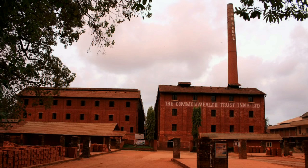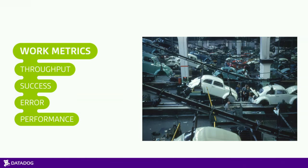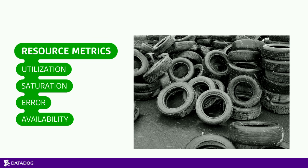Let's use an analogy — say you're working in a factory producing cars, specifically Teslas. Work metrics are the cars coming off the assembly line: throughput is how many cars you produce a day, successes are how many complete sellable cars versus lemons with cracked windshields or missing hubcaps. Performance is how efficiently you can turn around an individual unit. Resources are all the pieces going into making the product — utilization is how much more capacity you have, plus error rates and availability of those resources.